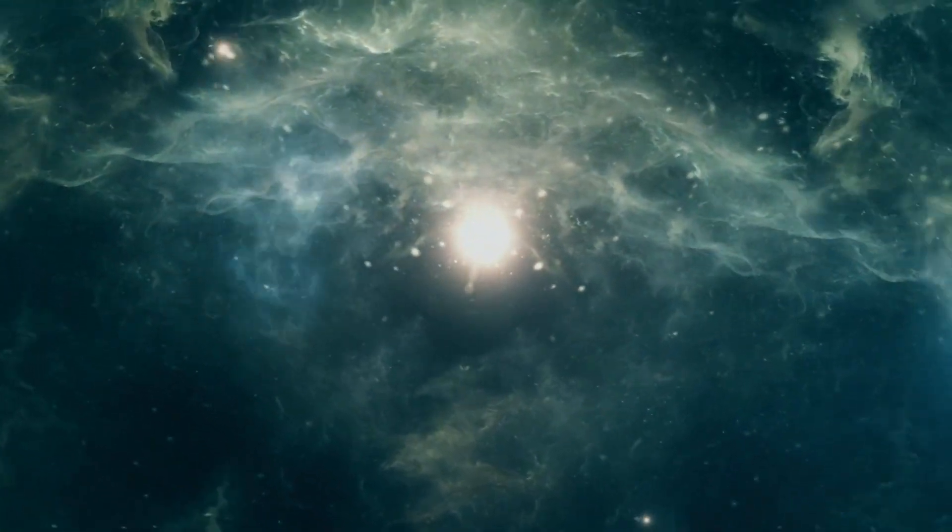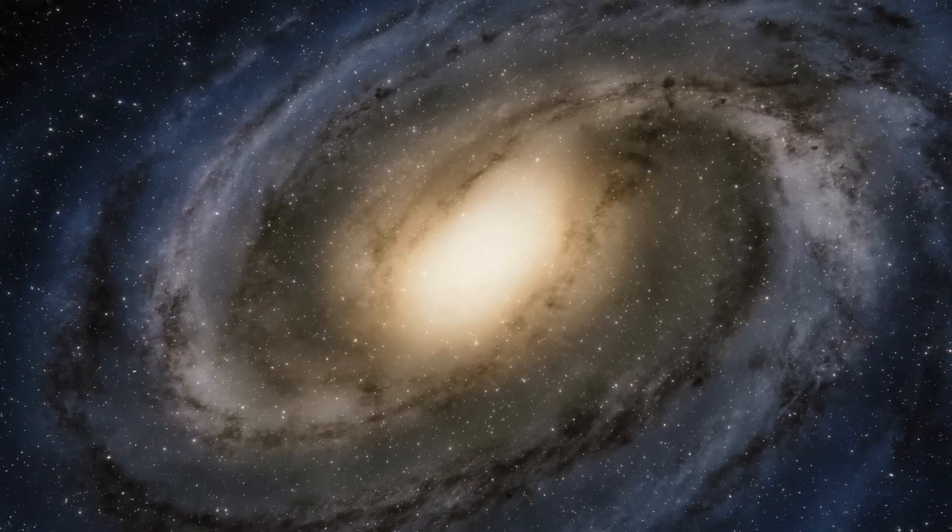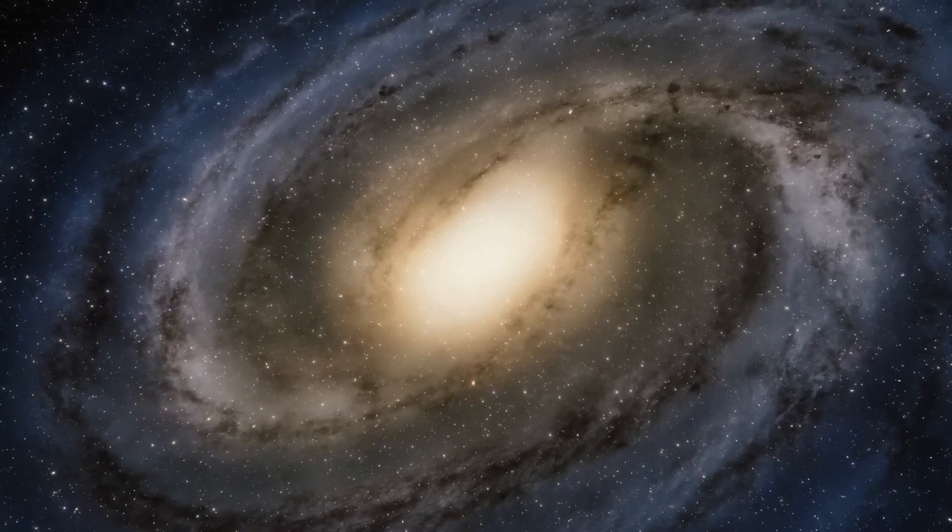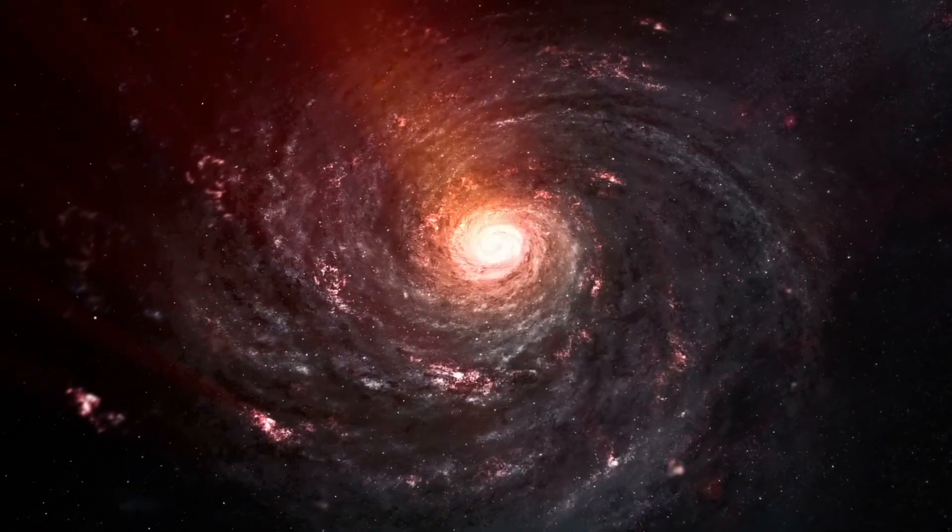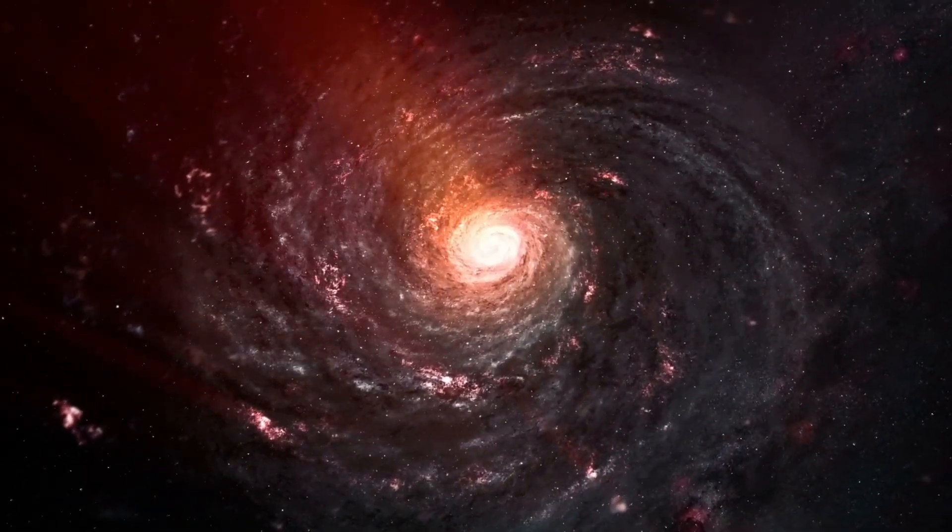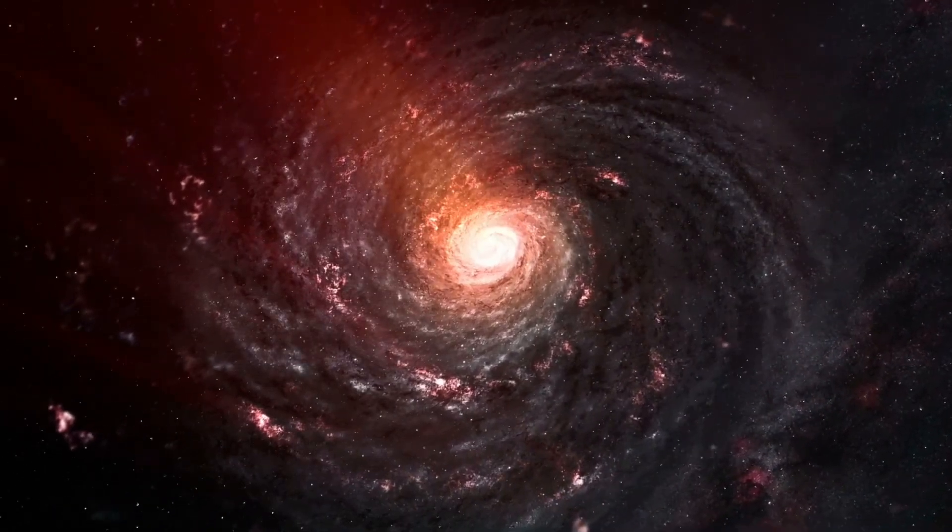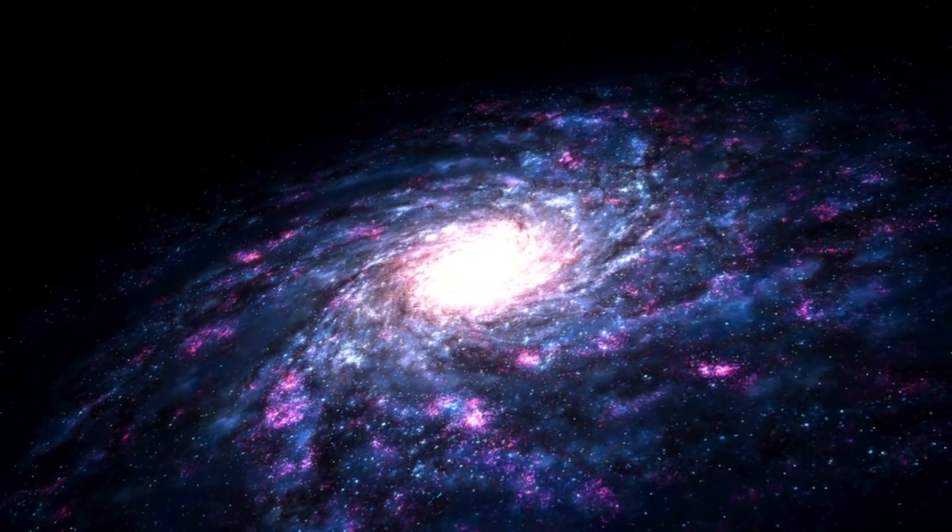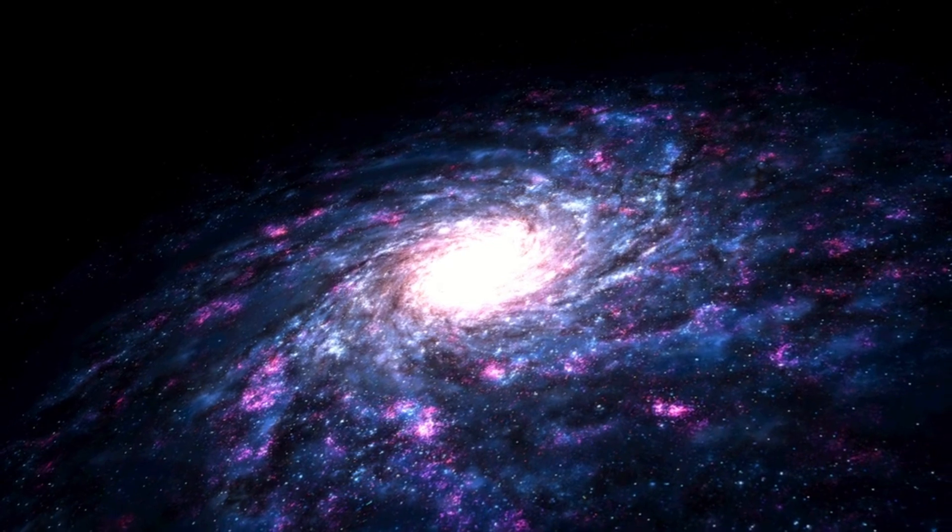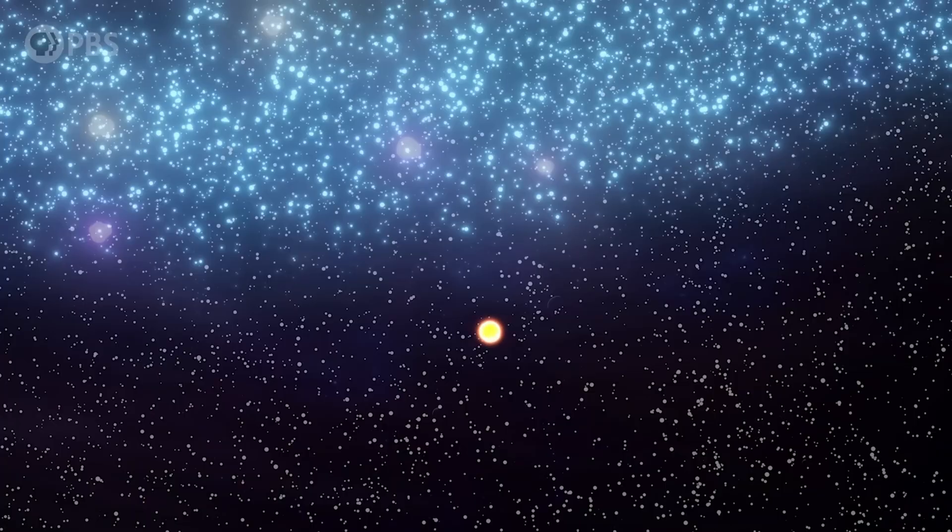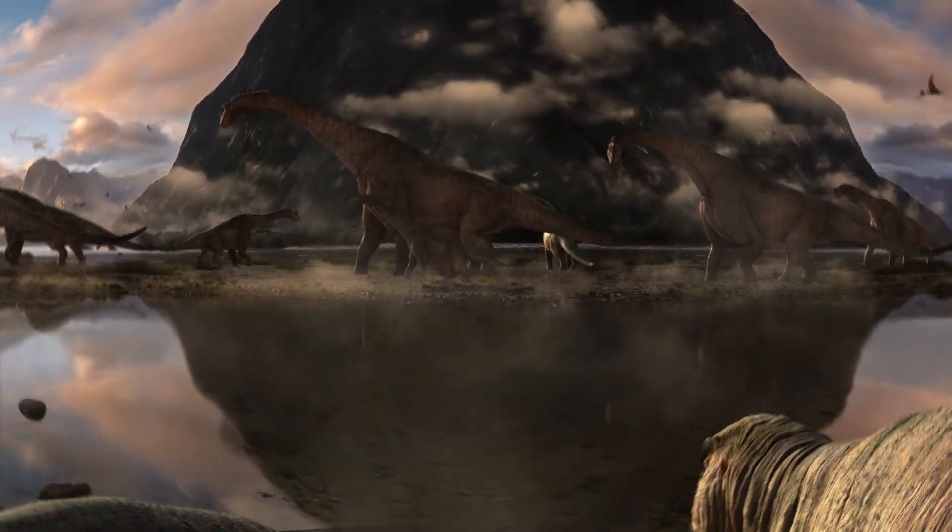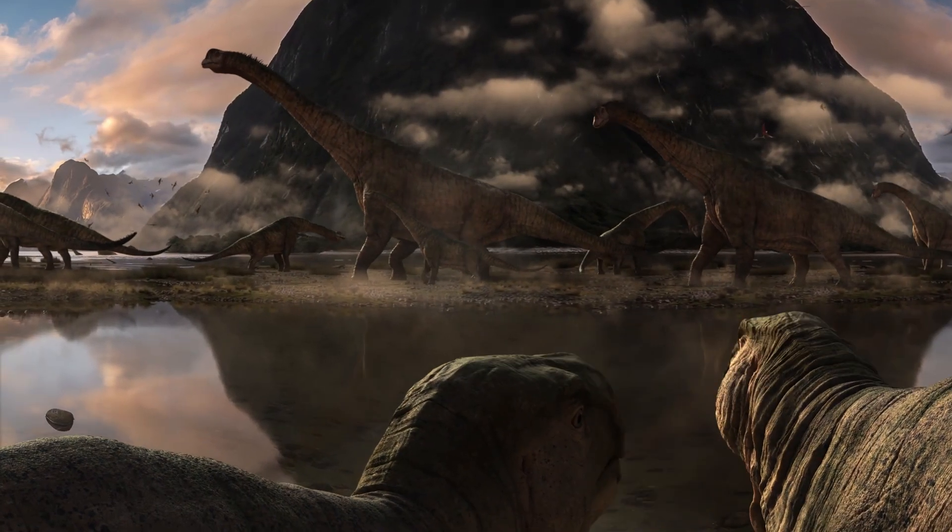But it also means we can learn an enormous amount about our galaxy's complex structure just by tracking the motion of its constituents. The solar system is moving at about 230 kilometers per second relative to the center of the Milky Way, give or take. That means a single orbit takes almost 230 million years. The last time the Earth was on this side of the galaxy, dinosaurs wandered Pangaea and trilobites had just gone extinct.